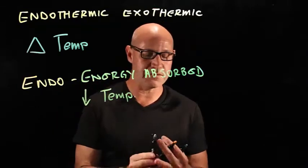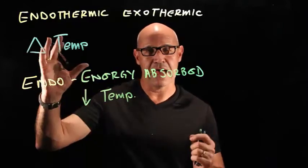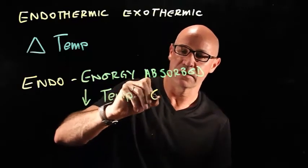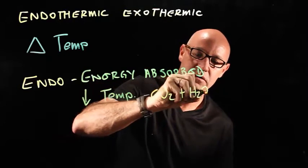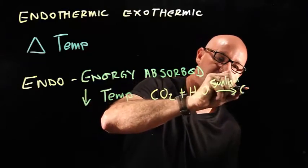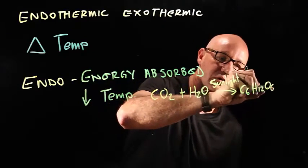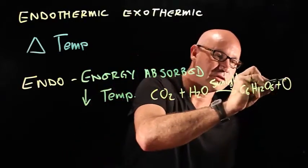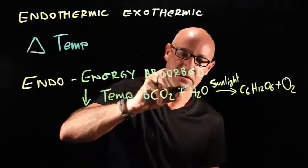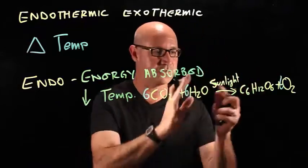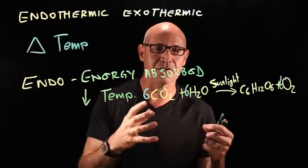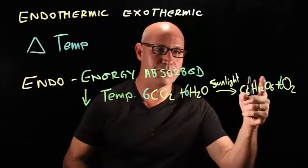A classic example of that is photosynthesis. Energy from the sun is converted into glucose: CO2 plus H2O with sunlight gives us C6H12O6 plus oxygen. To balance that we go 6-6-6. That's the type of reaction where energy from the sun is absorbed and gets locked into chemical bonds to form the glucose.